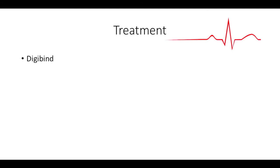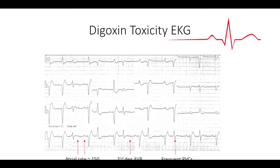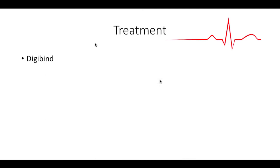The treatment is digibind. Regarding SVT in digoxin toxicity — to clarify, by SVT I mean a fast atrial rate, not necessarily conducted through the AV node. There could theoretically be an accessory pathway where conduction occurs and you could have conducted SVT, but I don't know the definitive answer to whether you'd need to worry about a WPW-type scenario in that setting. I can get back to you on that.